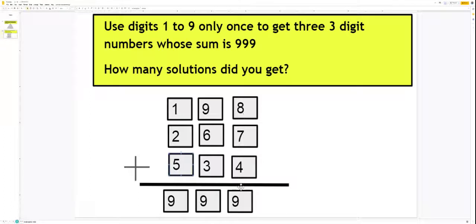So 8 plus 7 plus 4 is 19, 1 carry. 9 plus 1 is 10 plus 6 is 16 plus 3 is 19, 1 carry. 1 plus 1 is 2 plus 2 is 4 plus 5 is 9.